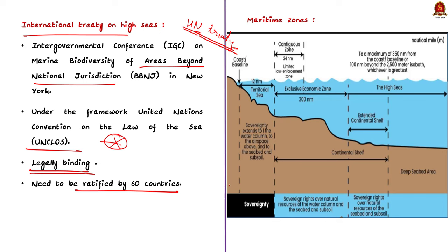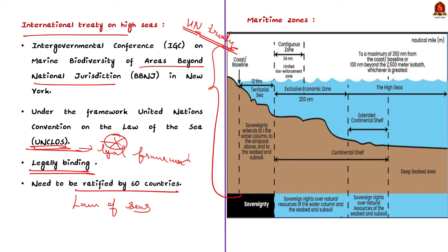The United Nations Convention on the Law of the Sea (UNCLOS) is an international agreement that establishes the legal framework for marine and maritime activities, also known as the Law of the Sea. It divides the marine area into five main zones: internal waters, territorial sea, contiguous zone, exclusive economic zone, and the high seas.